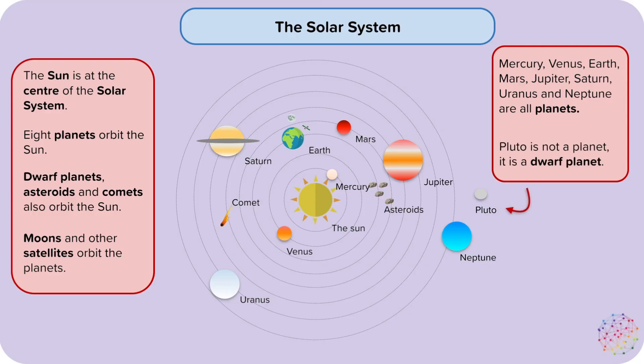Pluto is not a planet. It is a dwarf planet. Like planets, dwarf planets are spherical and orbit the sun. However, unlike planets, they have not cleared their field. This means that other objects nearby also orbit the sun rather than orbiting the dwarf planet.